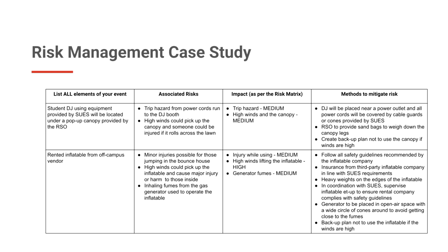To reduce these risks, we plan to place the DJ station as close to a power outlet as possible and cover the cords running from the outlet to the sound equipment with cable guards or brightly colored cones. In addition, the RSO plans to provide sandbags to weigh down the legs and feet of the canopy. We have also developed a backup plan that we will not set up the pop-up canopy if the winds are high on the day of the event, or we'll take the canopy down if wind picks up too much.